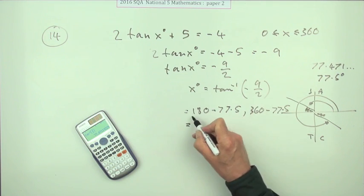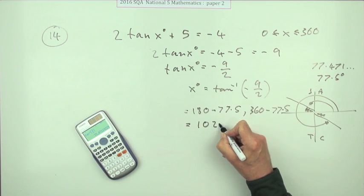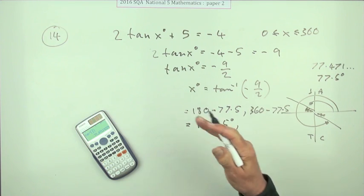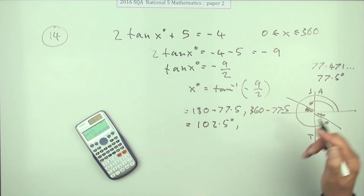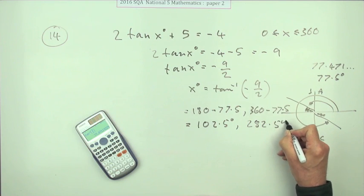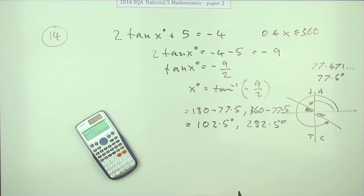So even without a calculator that's going to be 102.5. Another thing you could do is the tangents just move 180 at a time - just add 180 onto that, 282.5, which should be the same as that.